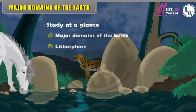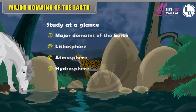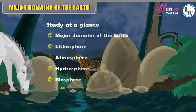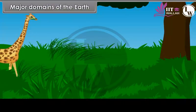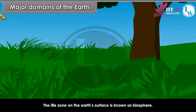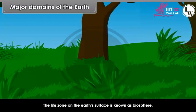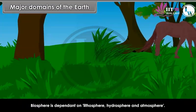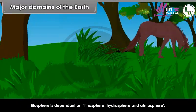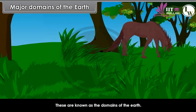The major domains of the Earth are Lithosphere, Atmosphere, Hydrosphere, and Biosphere. The life zone on the Earth's surface is known as the Biosphere. The Biosphere is dependent on the Lithosphere, Hydrosphere and Atmosphere. These are known as the domains of the Earth.